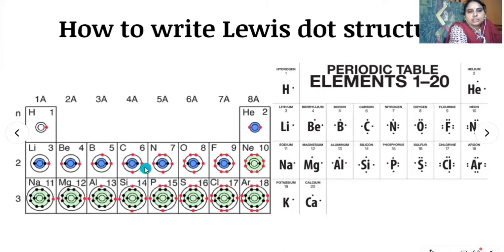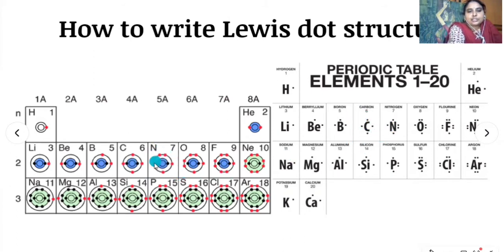For carbon, atomic number is six, electronic configuration is 1s2, 2s2, 2p2. The inner shell contains two electrons and four electrons are present in the outermost shell, so put four dots on carbon. For nitrogen, atomic number is seven, electronic configuration is 1s2, 2s2, 2p3. The outermost shell contains five electrons, so valence electrons are five — write five dots on nitrogen.